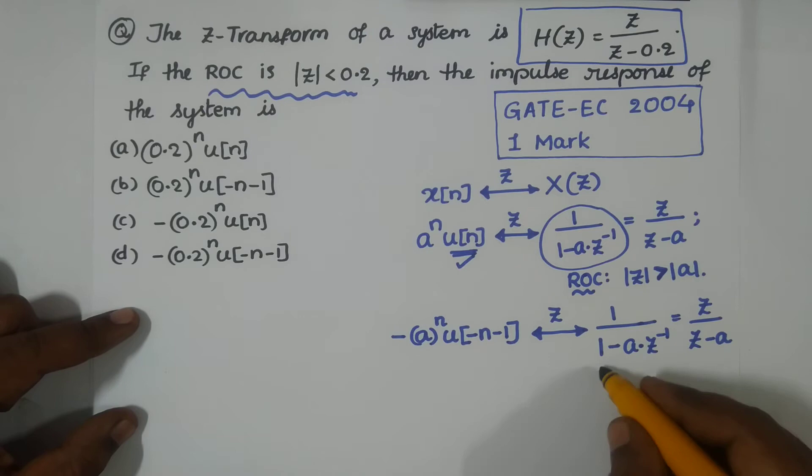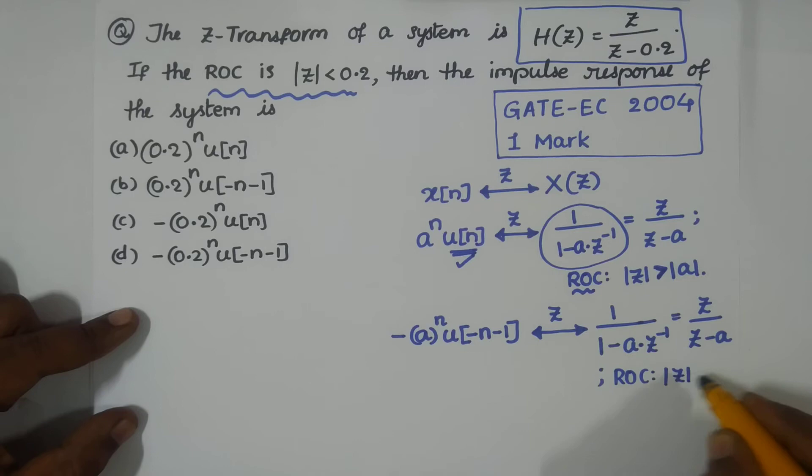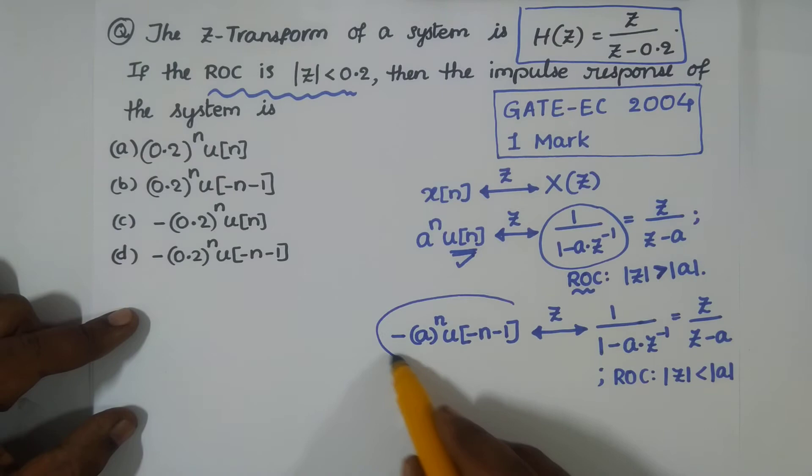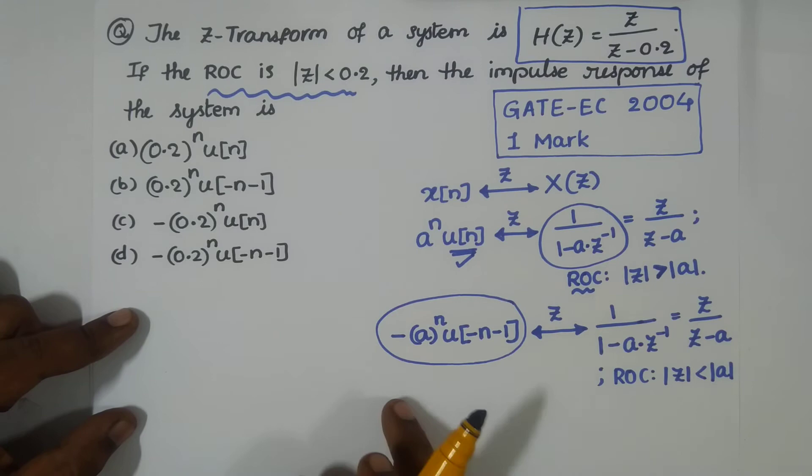Whenever we have anti-causal sequences, this is a left side sequence. This one is a left side sequence.